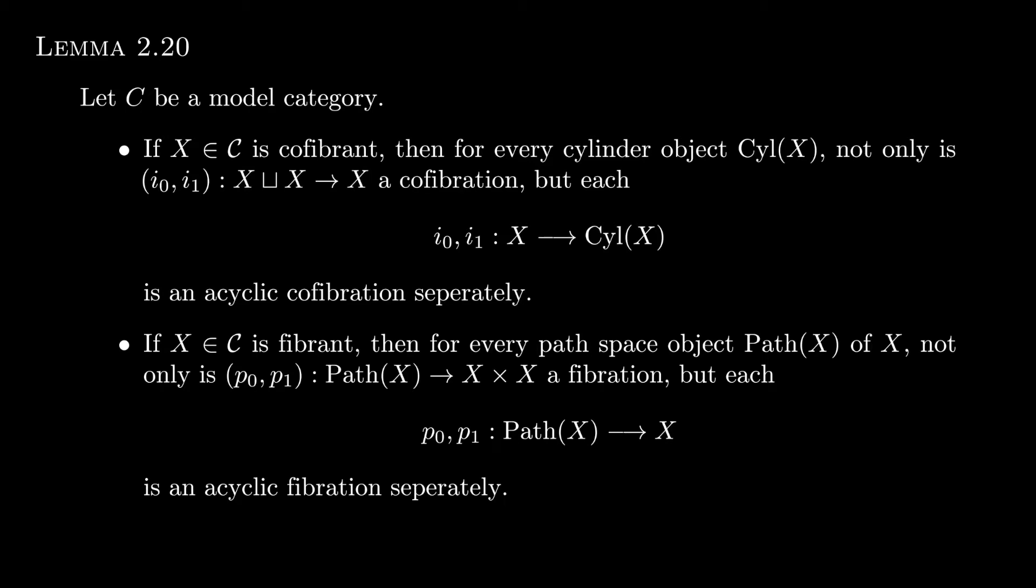But it turns out that we can have an even stronger statement with some added conditions. If x is co-fibrant, then every cylinder object factors the co-diagonal as a map followed by a weak equivalence, where each component map is separately an acyclic co-fibration.